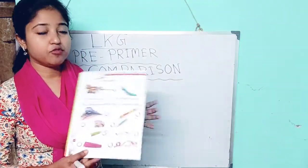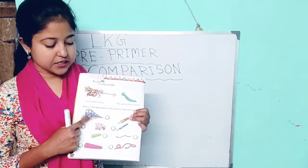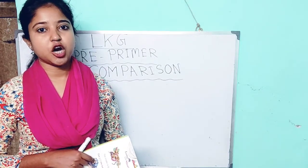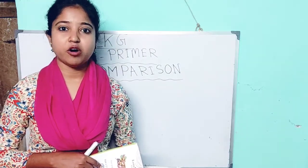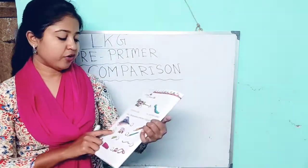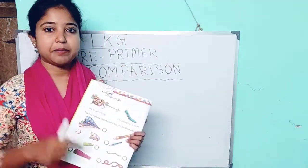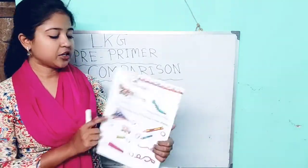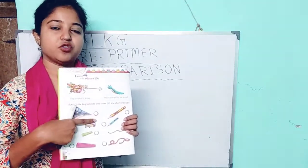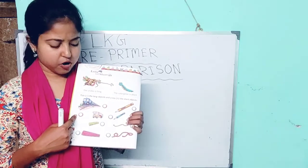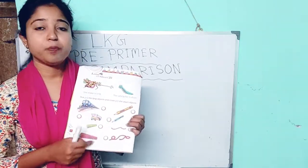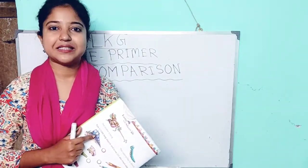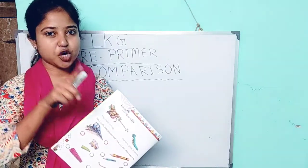Now you have to do some work here. You can see this is a train and this is a bus — the train is long and the bus is short. You have to put a tick mark for the long object and a cross mark for the short object. So you will put a tick mark for the train and a cross mark for the bus. Here, two pencils are given — which pencil is long? You will put a tick mark, and which pencil is short? You will put a cross mark.